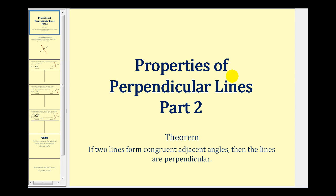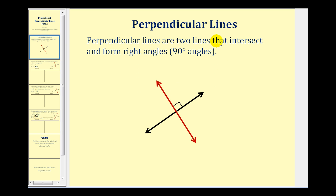Welcome to a second video on the properties of perpendicular lines. In this video we'll prove the theorem: if two lines form congruent adjacent angles, then the lines are perpendicular. Let's review the definition of perpendicular lines: perpendicular lines are two lines that intersect and form right angles, and right angles measure ninety degrees.